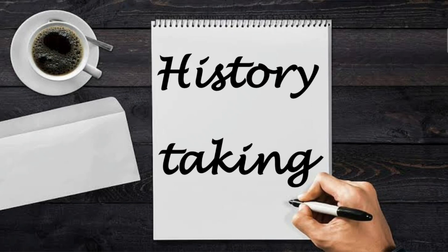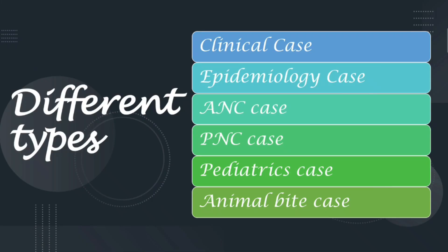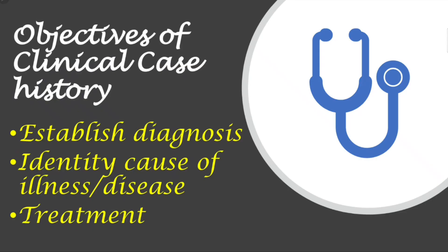Before going ahead, we need to see the different types of cases so we understand the different types of history takings. There are: clinical case, epidemiology case, ANC (antenatal care) case for pregnant women, PNC (postnatal care) case for mothers who have just given birth, pediatrics case, and animal bite case. In this video we are going to focus on the clinical case history.